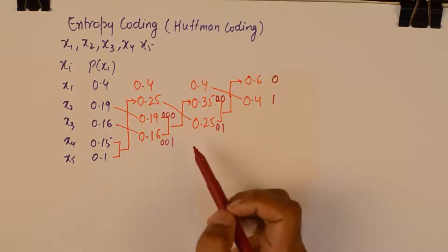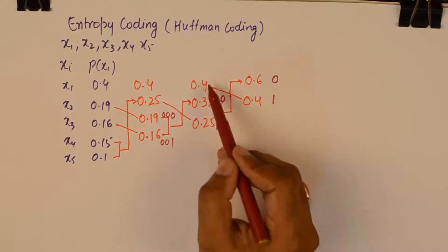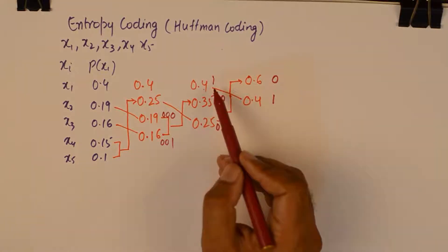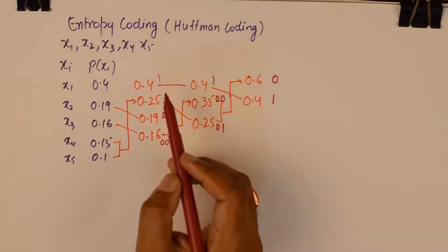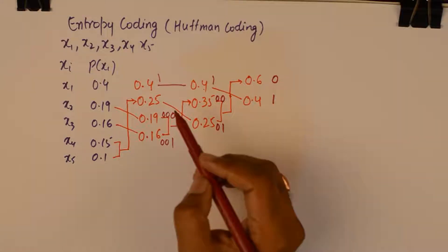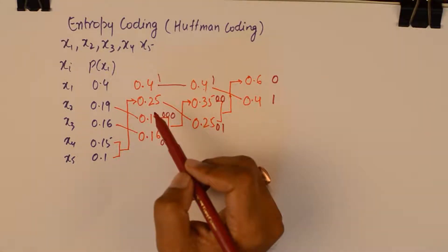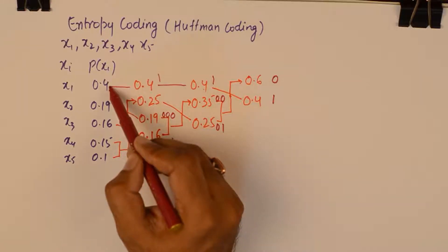And similarly let's go to this. 0.4 transfers its 1 to its child. And then the previous one also gets a 1. And then the previous one also gets a 1. And now this gets a 1 here also.